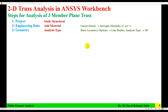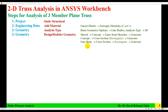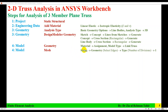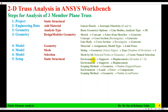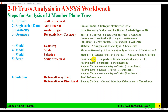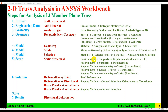The steps are: add material in Engineering Data, select analysis type and geometry options in Geometry, then sketch or model the truss in Design Modeler. Then do material assignment and model type in the Model, then mesh, then selection of nodes and elements. Apply boundary conditions as supports, apply load, and in Solution request total deformation, directional deformation, and axial force. Finally, solve and view directional deformation and axial force results.